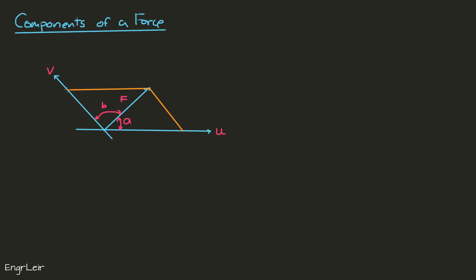And then parallel to u, so this side is parallel to the u-axis and this side is parallel to the v-axis. And therefore we have this parallelogram. The orange line parallel to v represents the f sub v or the v component of our force.